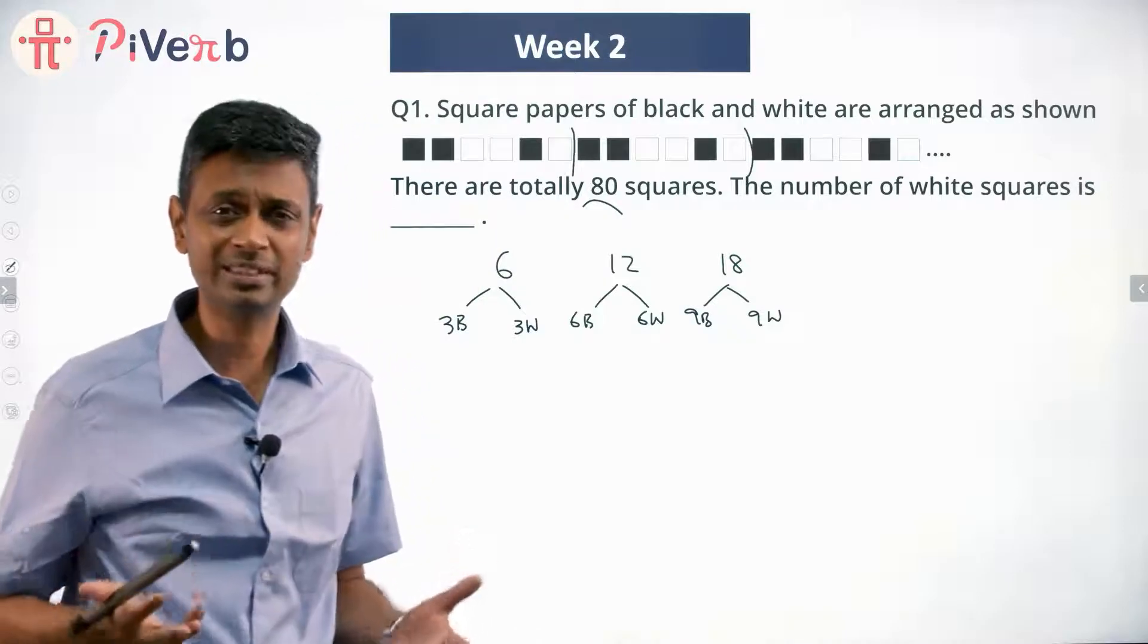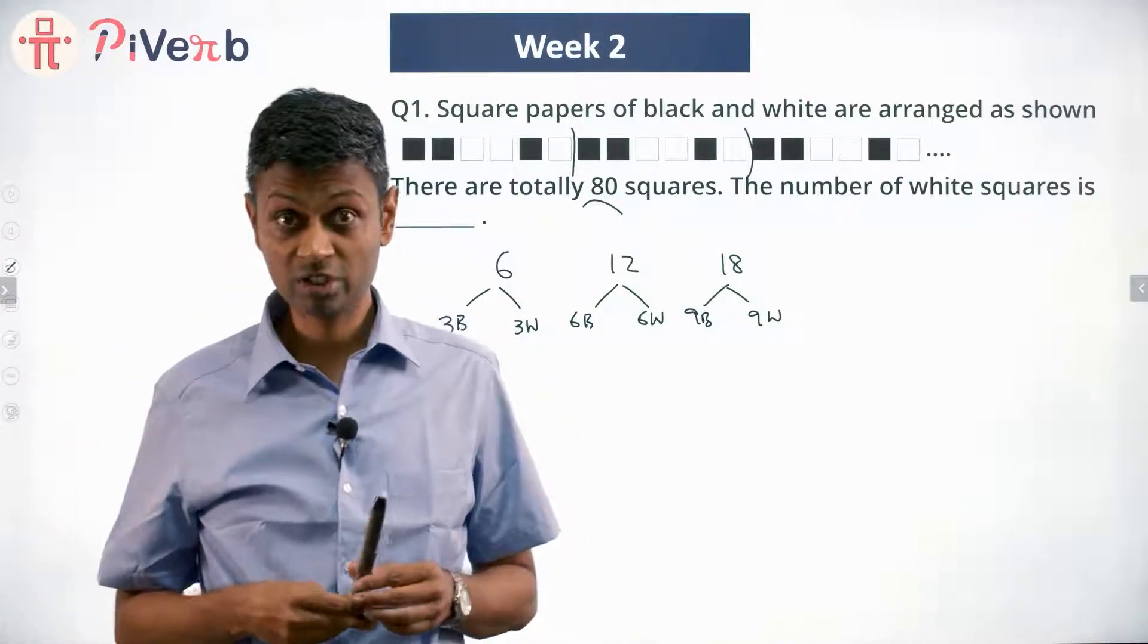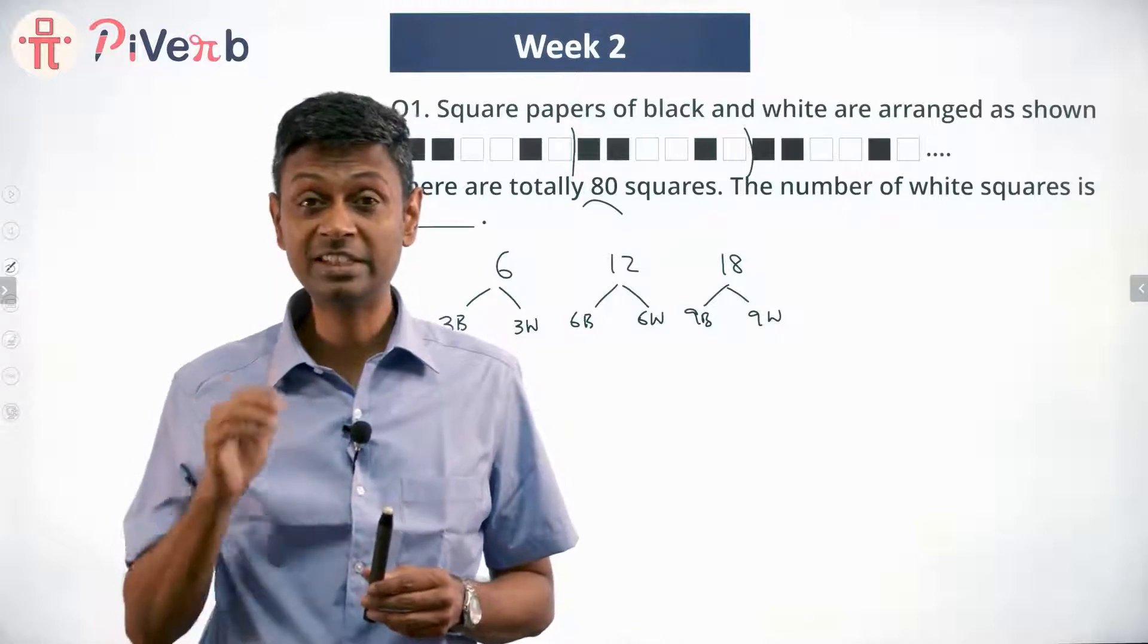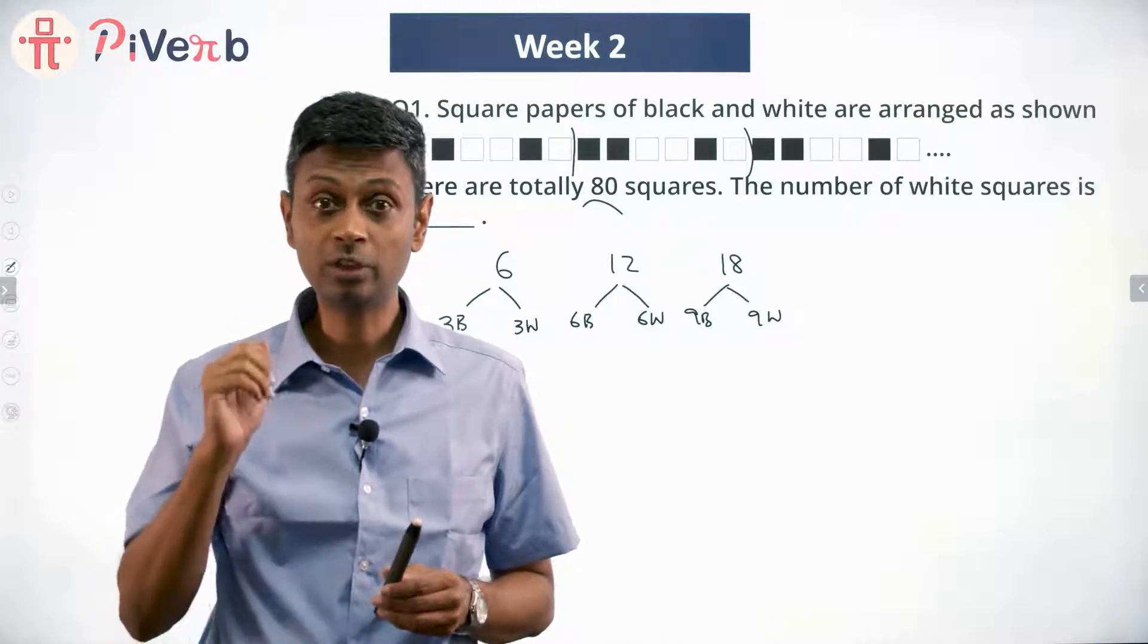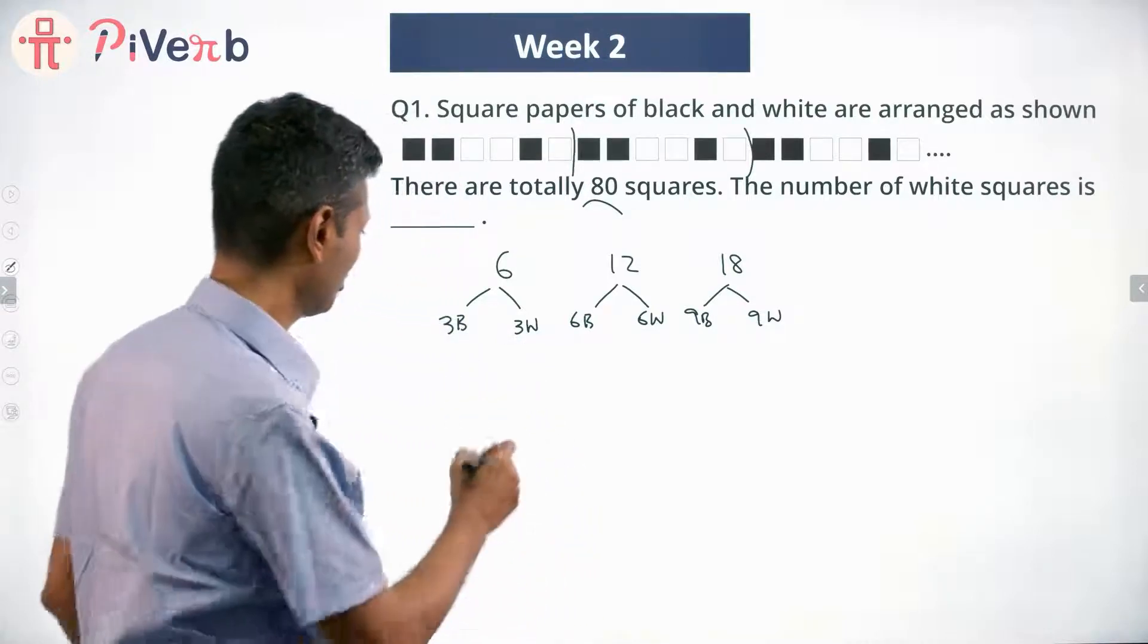First 18 will be nine black, nine white. So any multiple of six, this question becomes very easy. First 60, easy. First 66, easy. 72, easy. 78, easy. 84, 84, I don't want to do 84.